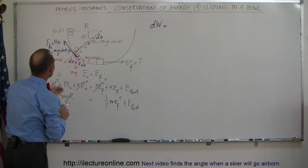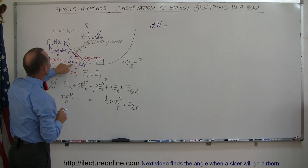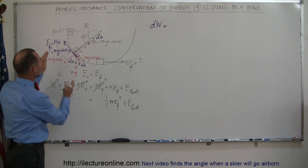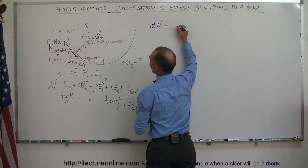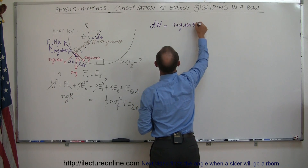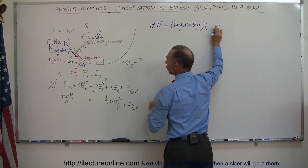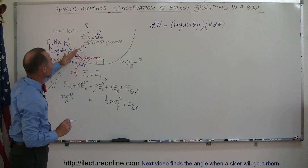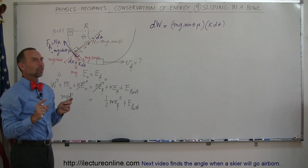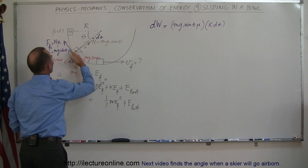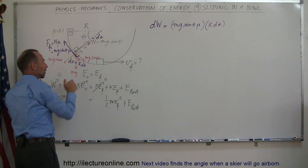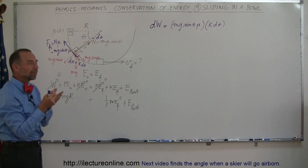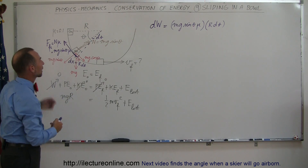Multiplying the friction force Mg sinθ · μ by the distance traveled r dθ gives force times distance, which is work. So dW = Mg sinθ · μ · r dθ. We also need to multiply by the cosine of the angle between the friction force and the displacement. Since the friction force and displacement are exactly 180 degrees apart, cosine of 180° equals negative one, meaning we're losing energy — doing work against friction.